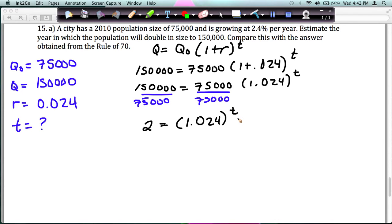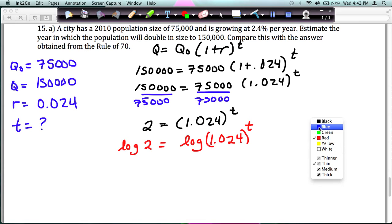Okay, whenever you're solving for an exponent like we are here, the only way to solve for it in this example is to take the log of both sides. So I'm going to take the log of 2 equals the log of 1.024 raised to the T power. The reason this works is the property of logs says this exponent can come out in front.